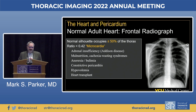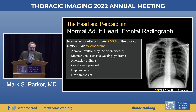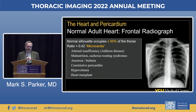The differential diagnosis for microcardia includes adrenal insufficiency, malnutrition, various cachectic or wasting syndromes, anorexia, bulimia, constrictive pericarditis, and hypovolemia. Depending upon the relative size of the donor heart to the recipient thorax, you can even see microcardia in the setting of an orthotopic heart transplant.